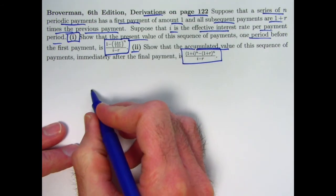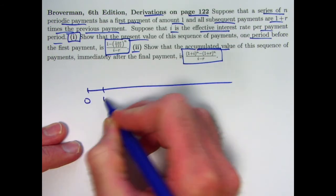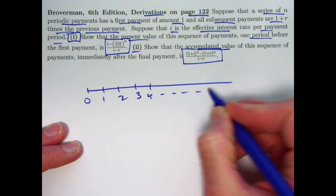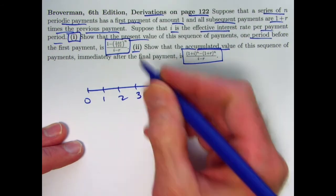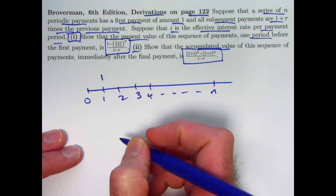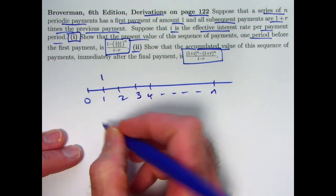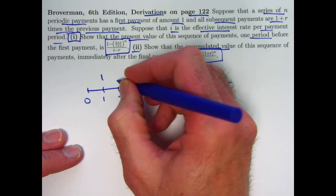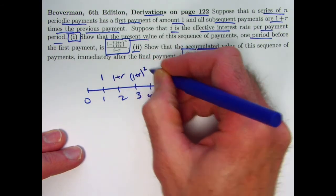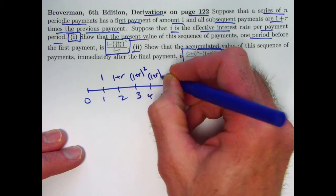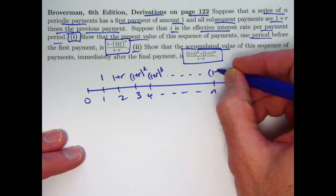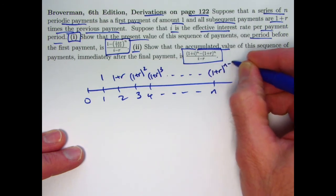Let's draw a number line timeline. Here's time 0, time 1, time 2, time 3, etc., up through time n. We've got n payments. The first payment at time 1 is 1 — we're evaluating the present value one period before, so that'll be at time 0. The second payment is 1 plus r, the third is (1 plus r) squared, the fourth is (1 plus r) cubed. By the pattern, the last — the nth payment — will be (1 plus r) to the n minus 1.